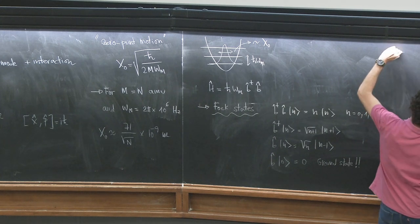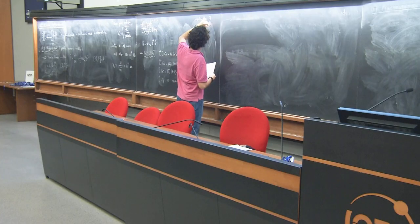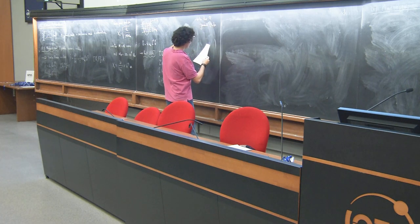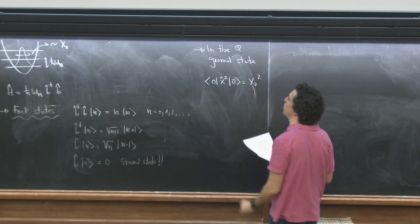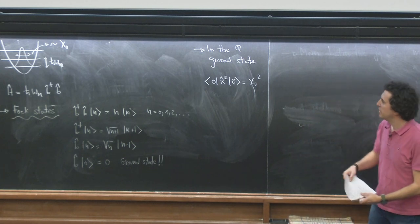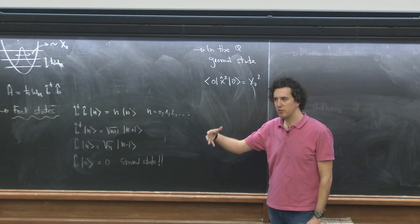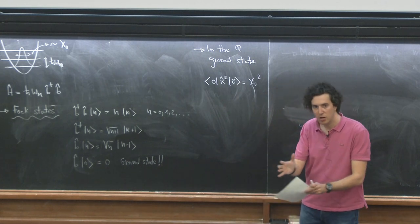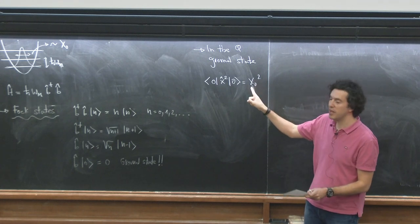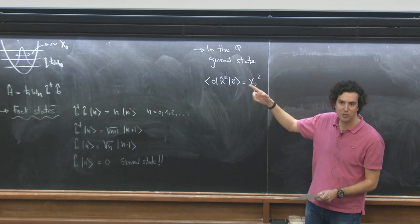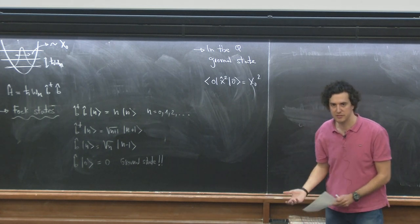In the quantum ground state, the fluctuations of x are precisely given by the zero-point motion squared. That's why this length scale is important. Experiments have been done where the motion of a big object — almost visible to the naked eye — is slowed down such that the fluctuations of the center of mass are of the order of x₀, around 10⁻⁴⁰ meters. Basically, this thing is only moving due to quantum fluctuations.